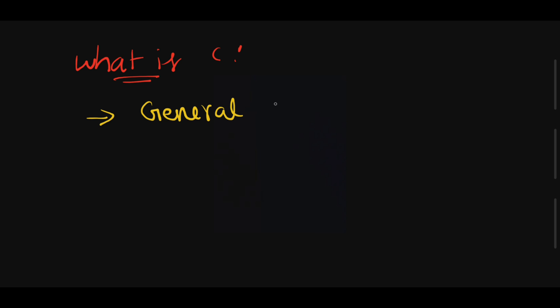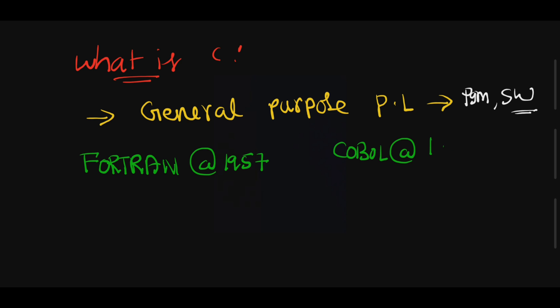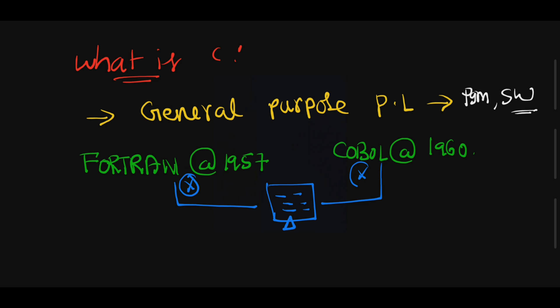What is C language? C is a general purpose programming language. General purpose means we can develop programs and design software. In the old days, two programming languages were popular: FORTRAN (Formula Translation), designed in 1957, and COBOL (Common Business Oriented Language), designed in 1960. These were popular for designing programs, but for general applications these programming languages were not suitable, and most people found them very difficult.